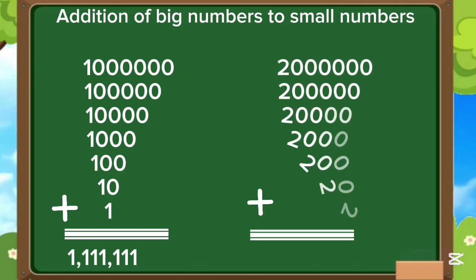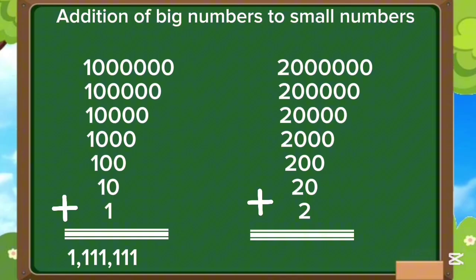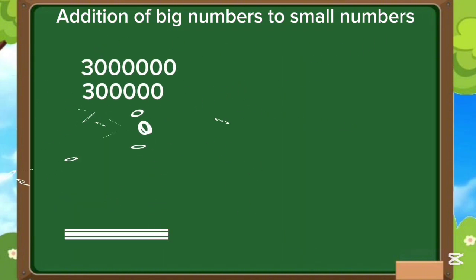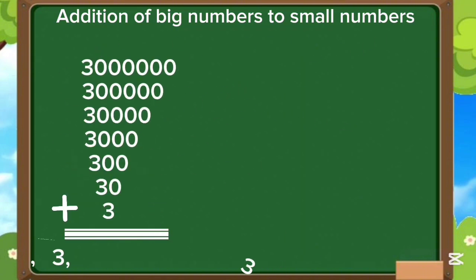2 million plus 200,000 plus 20,000 plus 2,000 plus 200 plus 20 plus 2 is equals to 2,222,222. 3 million plus 300,000 plus 30,000 plus 3,000 plus 300 plus 30 plus 3 is equals to 3,333,333.